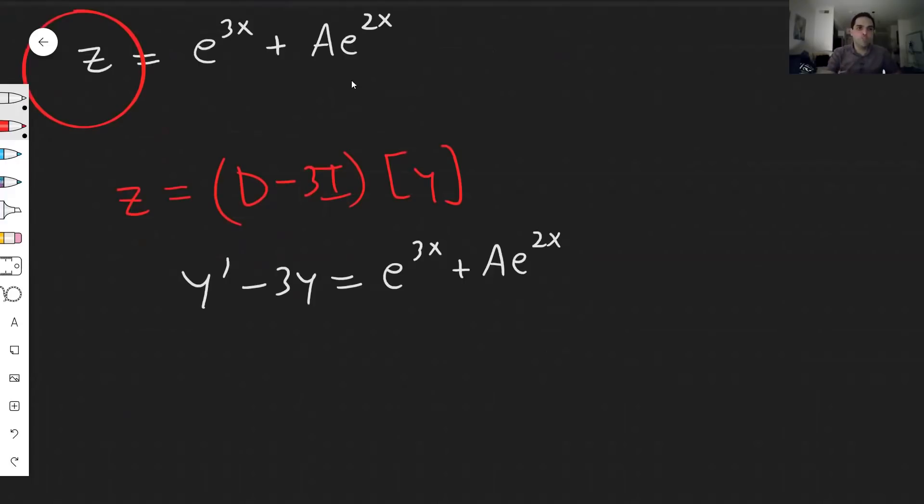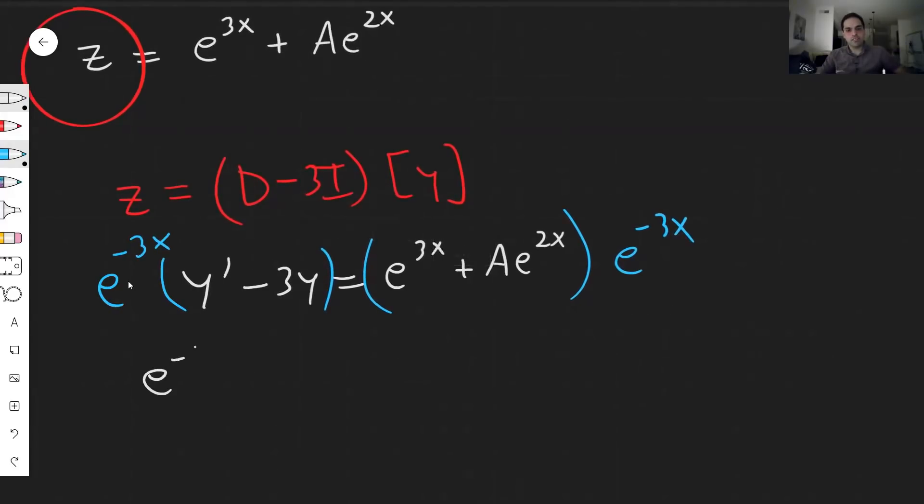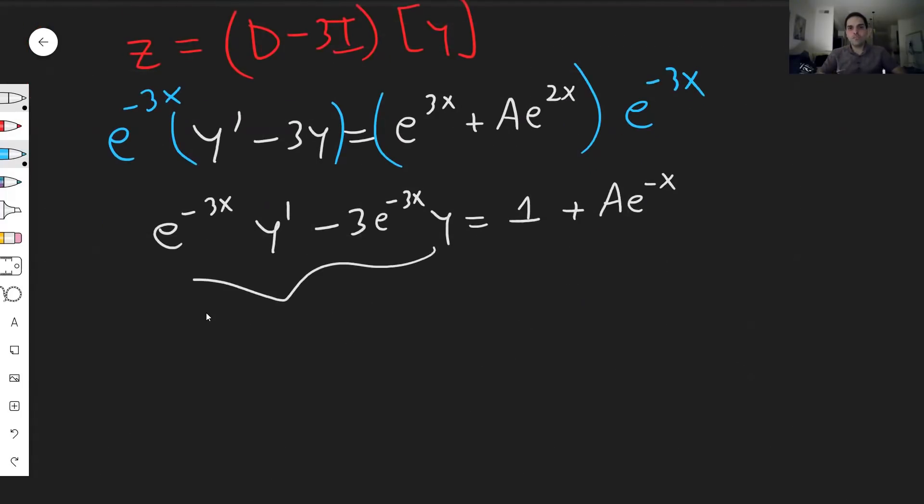Wonderful. So now we can just play the same spiel and multiply this by e^(something). So here we have a -3, so multiply this by e^(-3x). Then what this becomes is simply e^(-3x)y' - 3e^(-3x)y = e^(3x)e^(-3x) + Ae^(-x) = 1 + Ae^(-x). And again, lo and behold, this becomes a derivative. So (e^(-3x)y)' = 1 + Ae^(-x).